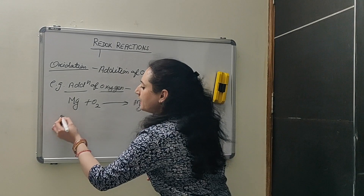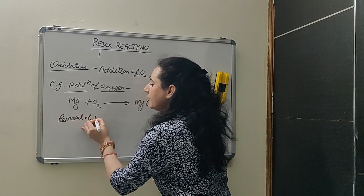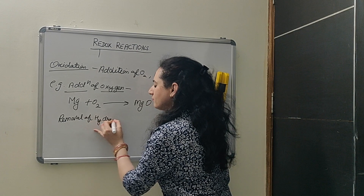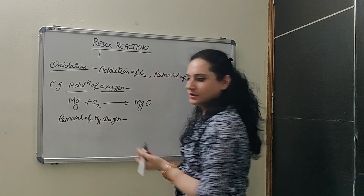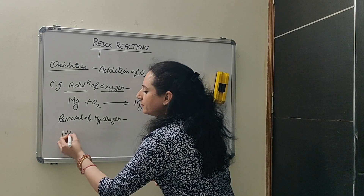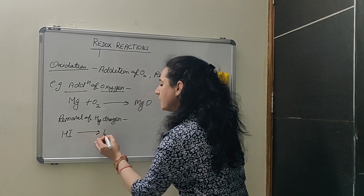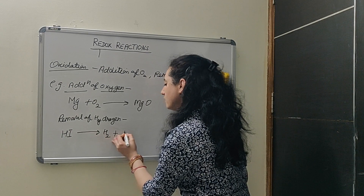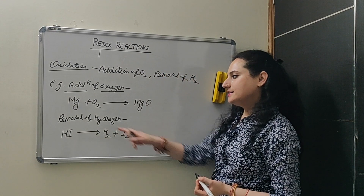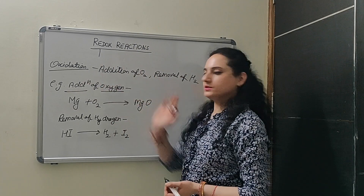Second one: removal of hydrogen. For example, hydroiodic acid — the hydrogen is removed and iodine is freed. That is removal of hydrogen, and this is also called oxidation.